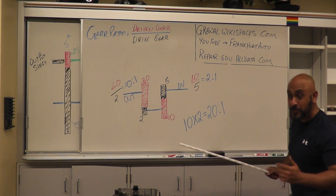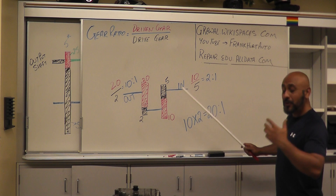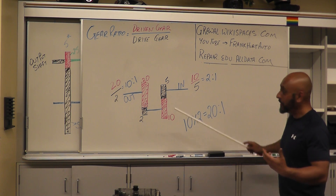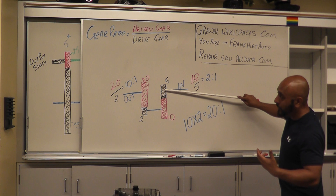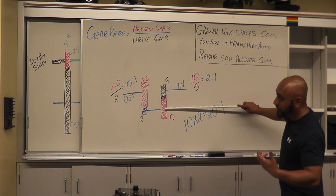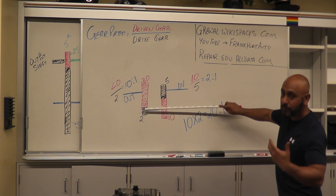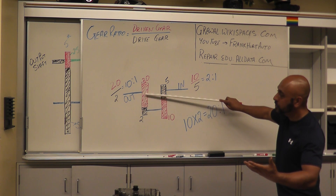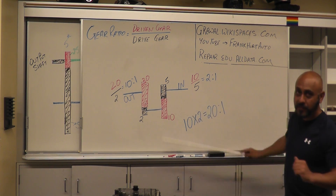On our transmission it's not that easy because you have two different sets of gears. Our power comes in from the engine, it goes through the gear to the counter shaft, and then depending on first, second, third, fourth, or fifth gear — whichever gear you're in — it goes back out. So you're dealing with two separate sets of gears.